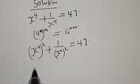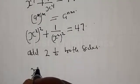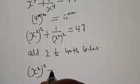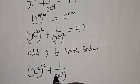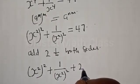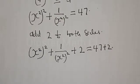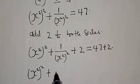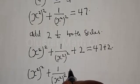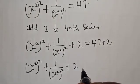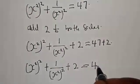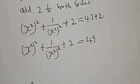Let's add 2 to both sides. Then we have (s²)² plus (1/s²)² plus 2 is equal to 47 plus 2, which gives us 49.